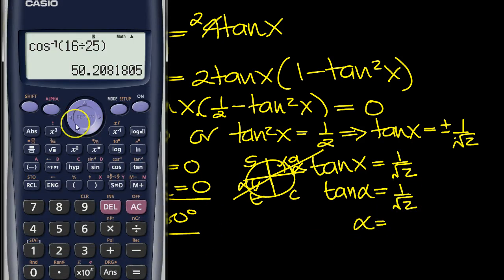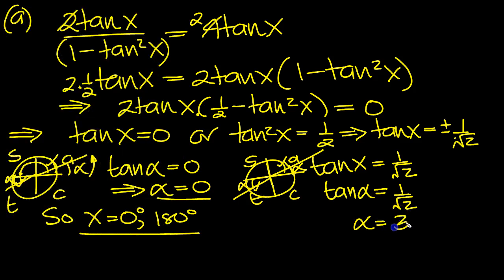So alpha is shift tan that then, let's tap that in the calculator. So shift, cancel, shift tan of 1 divided by root 2, square root of 2, outside the square root, close the bracket for the shift tan, arc tan. 35.26, we'll do it to 2dp, 35.26 degrees. So that's alpha then.